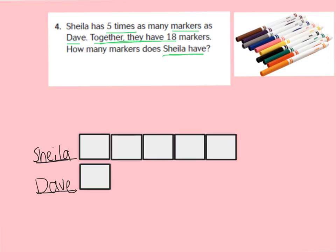Make sure that your model looks like mine. We are comparing Sheila and Dave's markers. We know that Sheila has 5 times as many markers as Dave, so Sheila should have 5 boxes under her name, and Dave has 1. It says that together they have 18 markers, so all of the boxes together will equal 18.